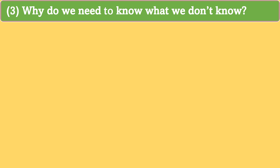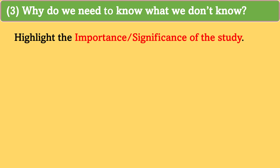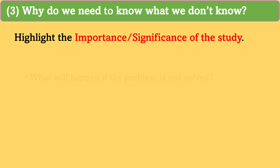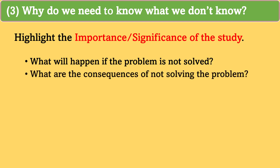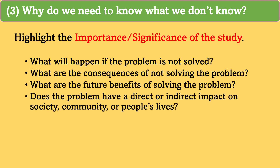Number three: why do we need to know what we don't know? In this part of the problem statement, you should highlight the importance and significance of this study. Why do you need to spend time and resources to know what we don't know about this problem? What will happen if the problem is not solved? What are the consequences of not solving the problem? What are the future benefits of solving the problem? Does the problem have a direct or indirect impact on society, community, or people's lives? These are helpful questions that you should ask yourself to write this part. Depending on the format you are following, you may combine these parts with other parts of the problem statement, but ensure that you clearly address them.